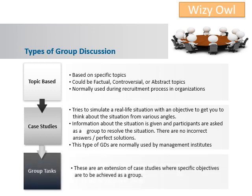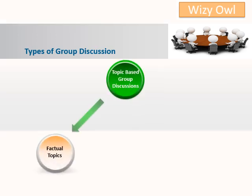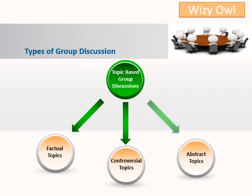The third type of group discussions are group tasks. These are an extension of case studies where specific objectives are to be achieved as a group. Group tasks are used by IMT and NMIMS in their selection process. Now, let's have a look in detail at topic-based group discussions. The three types are factual topics, controversial topics, and abstract topics.